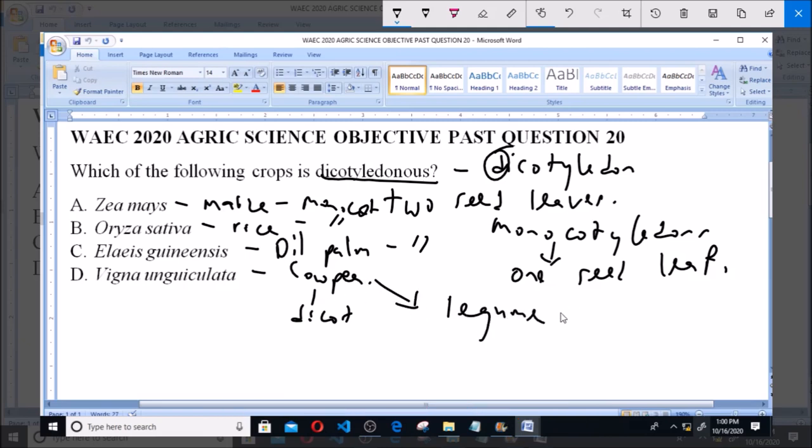And almost all legumes are dicotyledons. Almost all legumes are dicotyledons. So option D, Vigna unguiculata or cowpea, is the correct answer to this question.